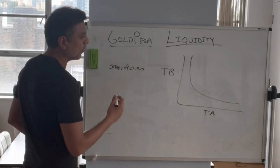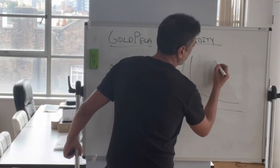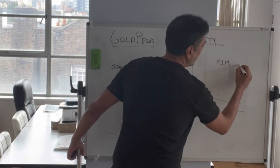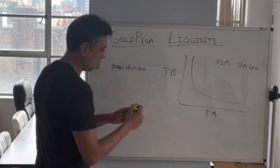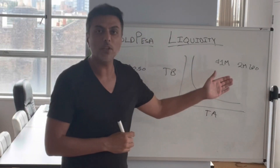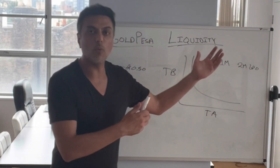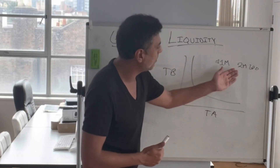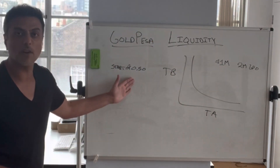So effectively, what we could do is we could put in a million dollars and 2 million GPO. The K value would be established, the price of GPO would be Y over X — so in this case it's 1 million divided by 2 million, which is a $0.50 starting price.